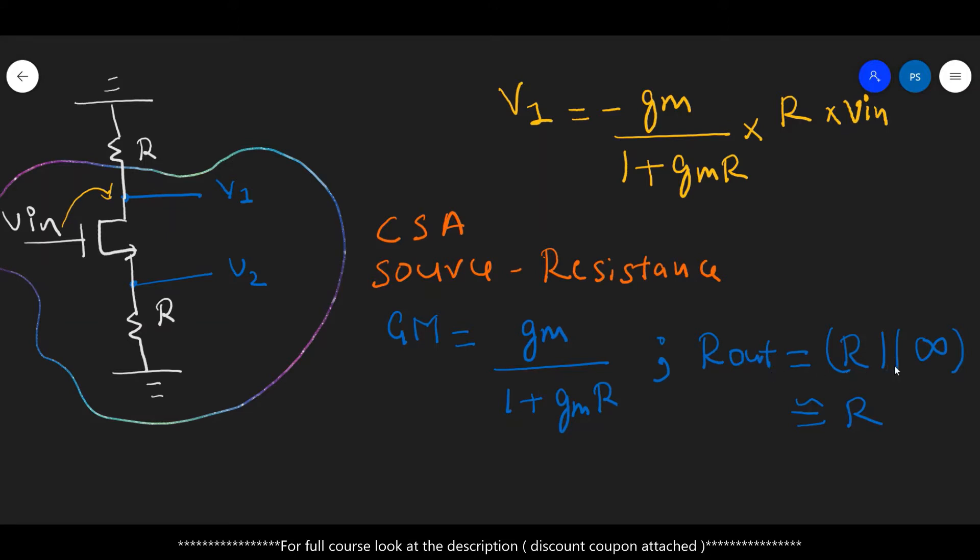So this is our output resistance. Now for a common source amplifier with the source degeneration, given Vin input, we can calculate the output V1 as the total gm into total R. That is minus, because it is common source amplifier, gm is gm by 1 plus gmR, into R, into the input Vin. So this is how the expression comes about.